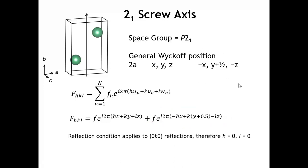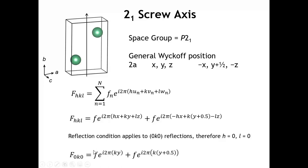The reflection condition for a 2 sub 1 screw axis parallel to b only applies to the 0k0 reflections. Therefore, h and l are always going to be 0 for the peaks we care about. Plugging in 0 for h and l, the expression simplifies. The first term has y as the position of atom 1, and the second term has y plus 1/2 for the position of atom 2.